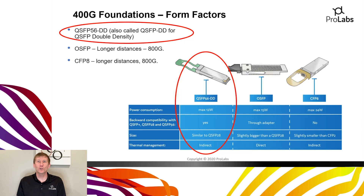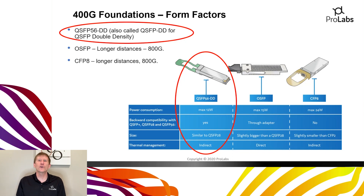The QSFP-DD form factor has been crowned the winner of the form factor battle. The other two form factors — CFP-8 and OSFP — are perhaps not going away entirely; there will be a market for them as we look beyond 400Gig. But right now, QSFP-56DD is the winner.